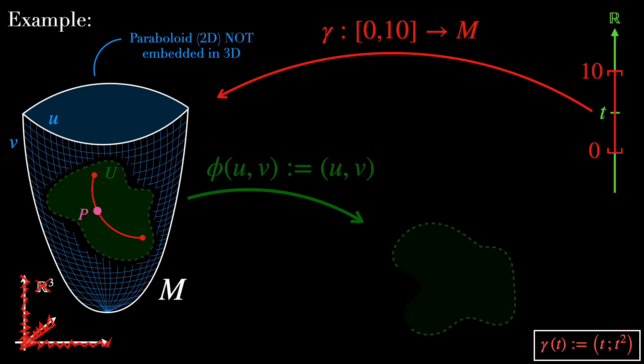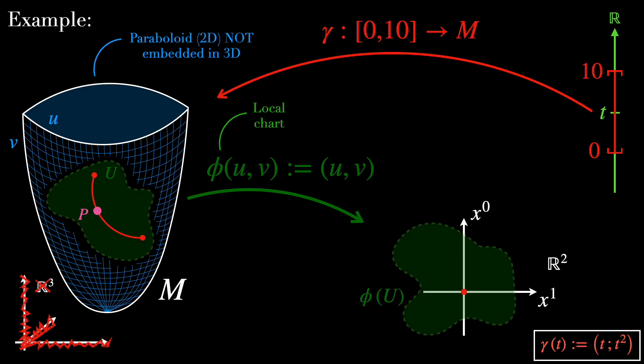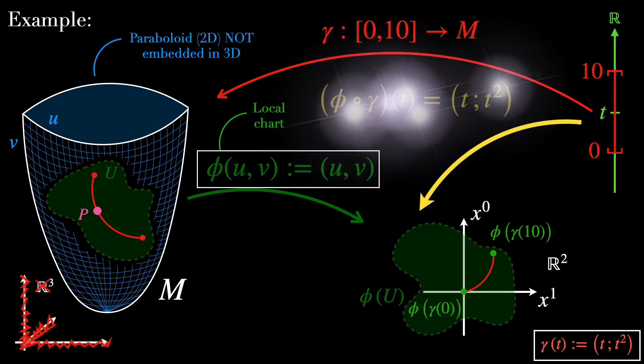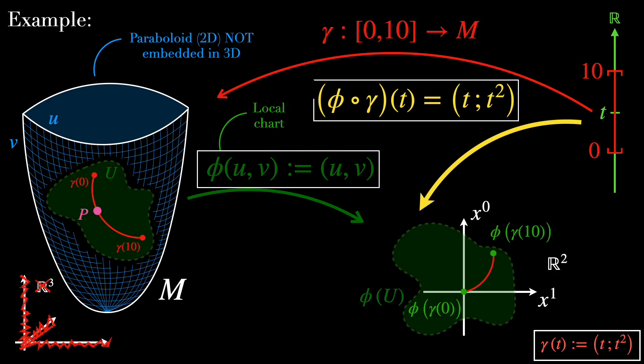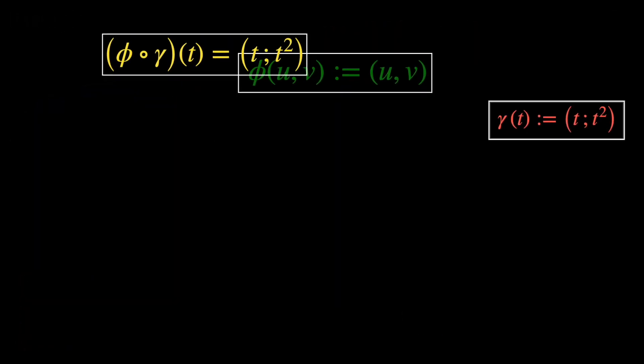Let's talk about the local chart Phi now. Define a mapping Phi from U to R2, which flattens the neighborhood U in M into R2. Phi of U, V is going to be defined as just U, V. This is a very simple mapping that takes intrinsic coordinates U, V and directly maps them in R2. Now we compose Phi with gamma. Phi composed with gamma goes from 0, 10 in the real line to R2. And in this case, Phi composed with gamma of T is going to be T, T squared, which is a parabola in R2. This is a composite mapping from a one-dimensional Euclidean space R to a 2D Euclidean space R2. And therefore, we can do calculus on it.